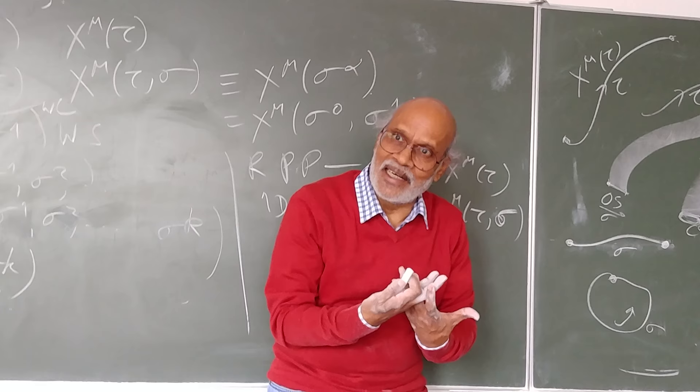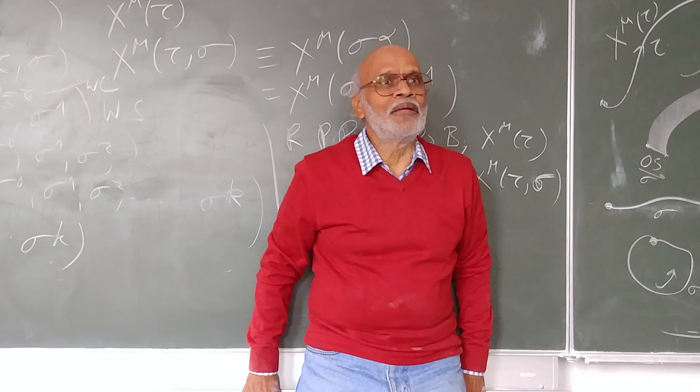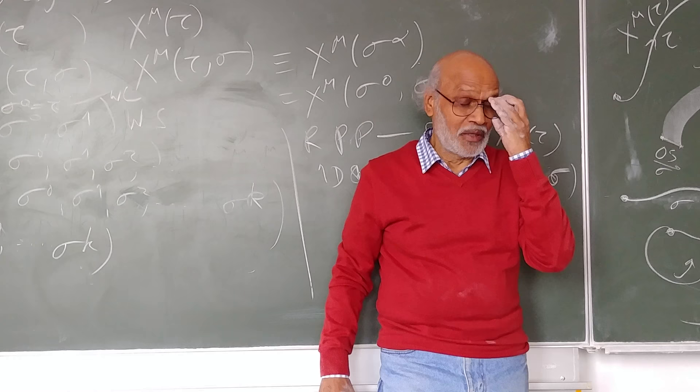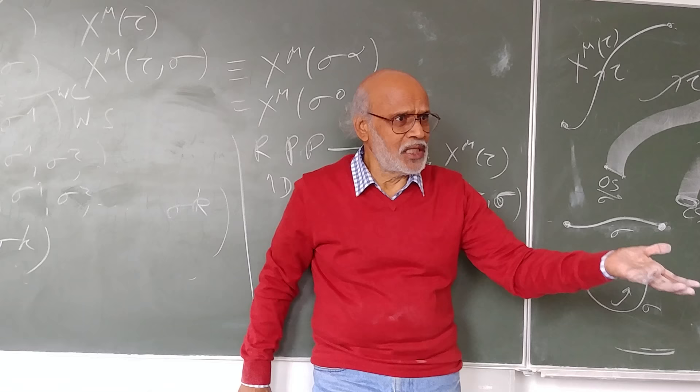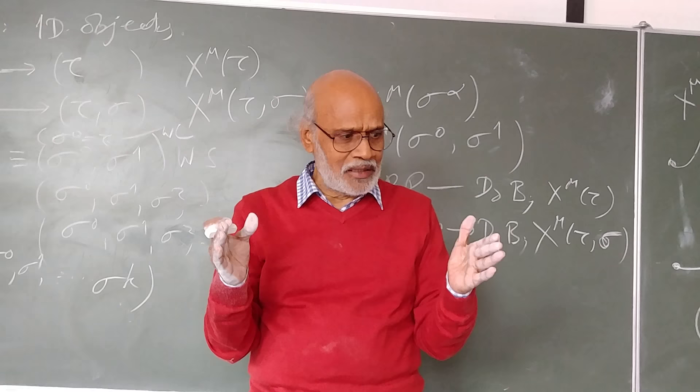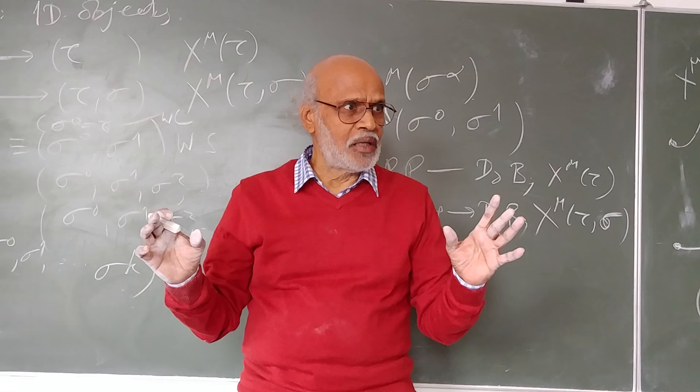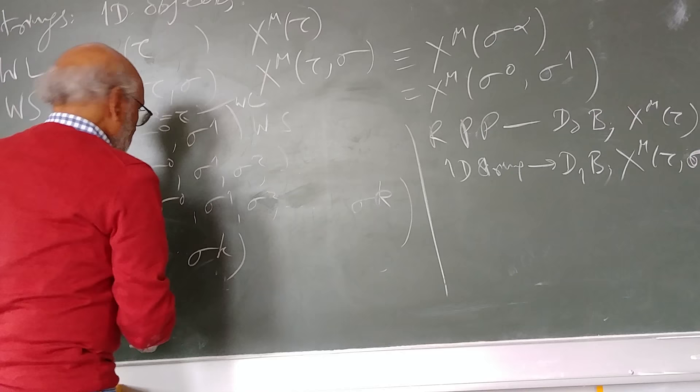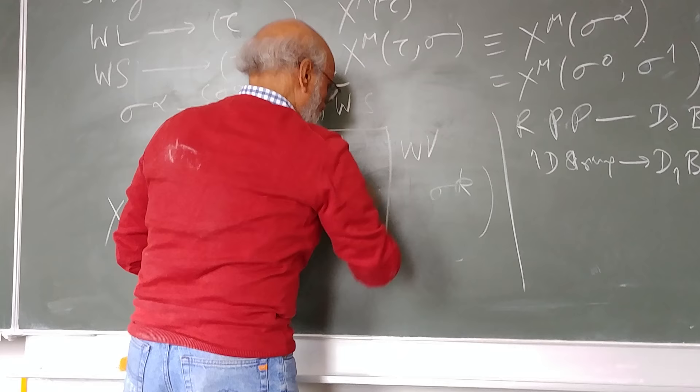As we saw, we have described our action for the relativistic point particle in two different ways. One was involving a square root which we called Nambu-Goto type action, and the other one we called Polyakov type action which does not involve a square root. In the Polyakov type we introduced an auxiliary field. We will do the same thing here. Therefore, it's very important to understand very clearly the relativistic point particle - then string theory would make sense to us. These are higher dimensional objects called p-branes, but let us not talk about them at the moment.